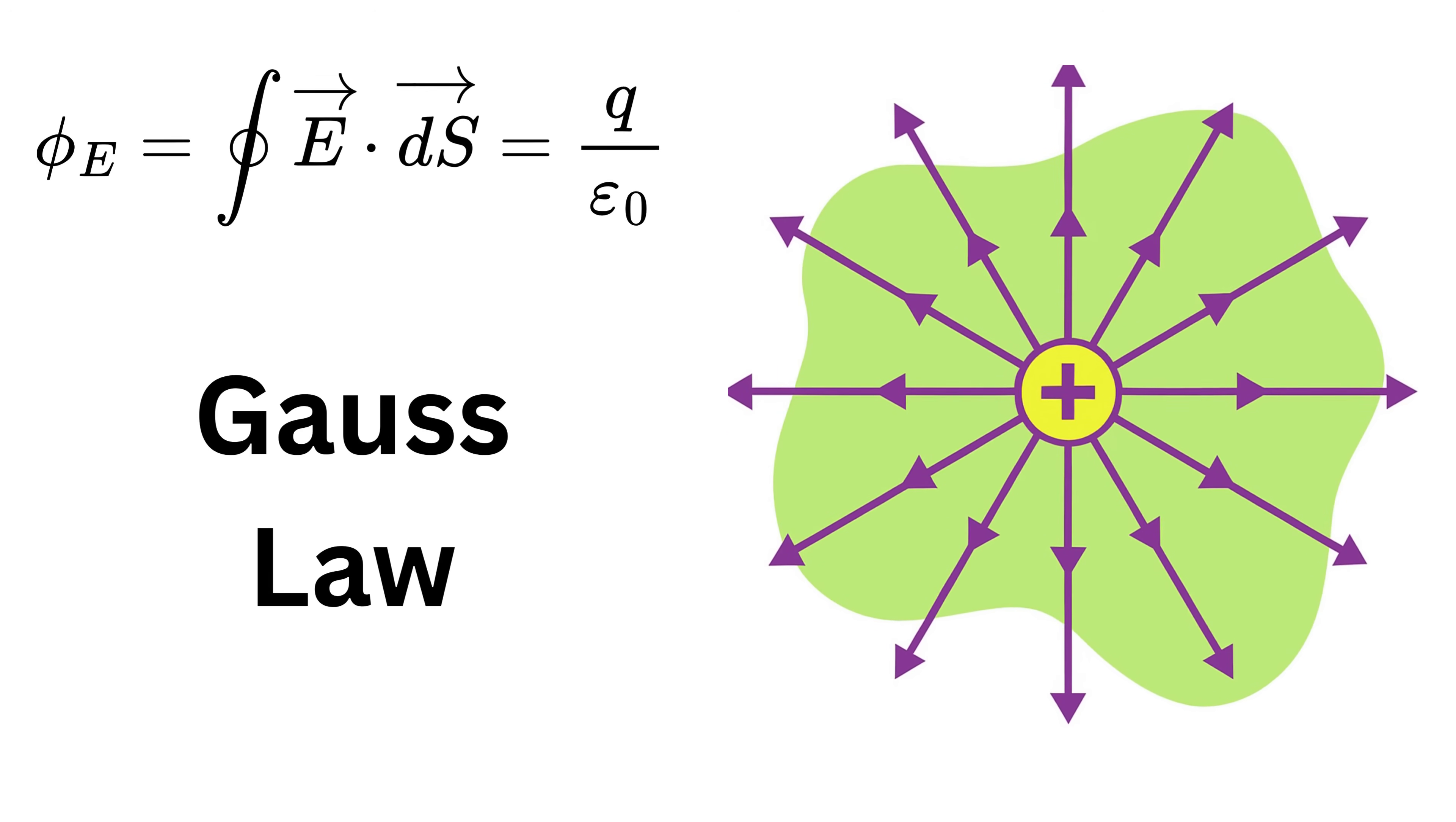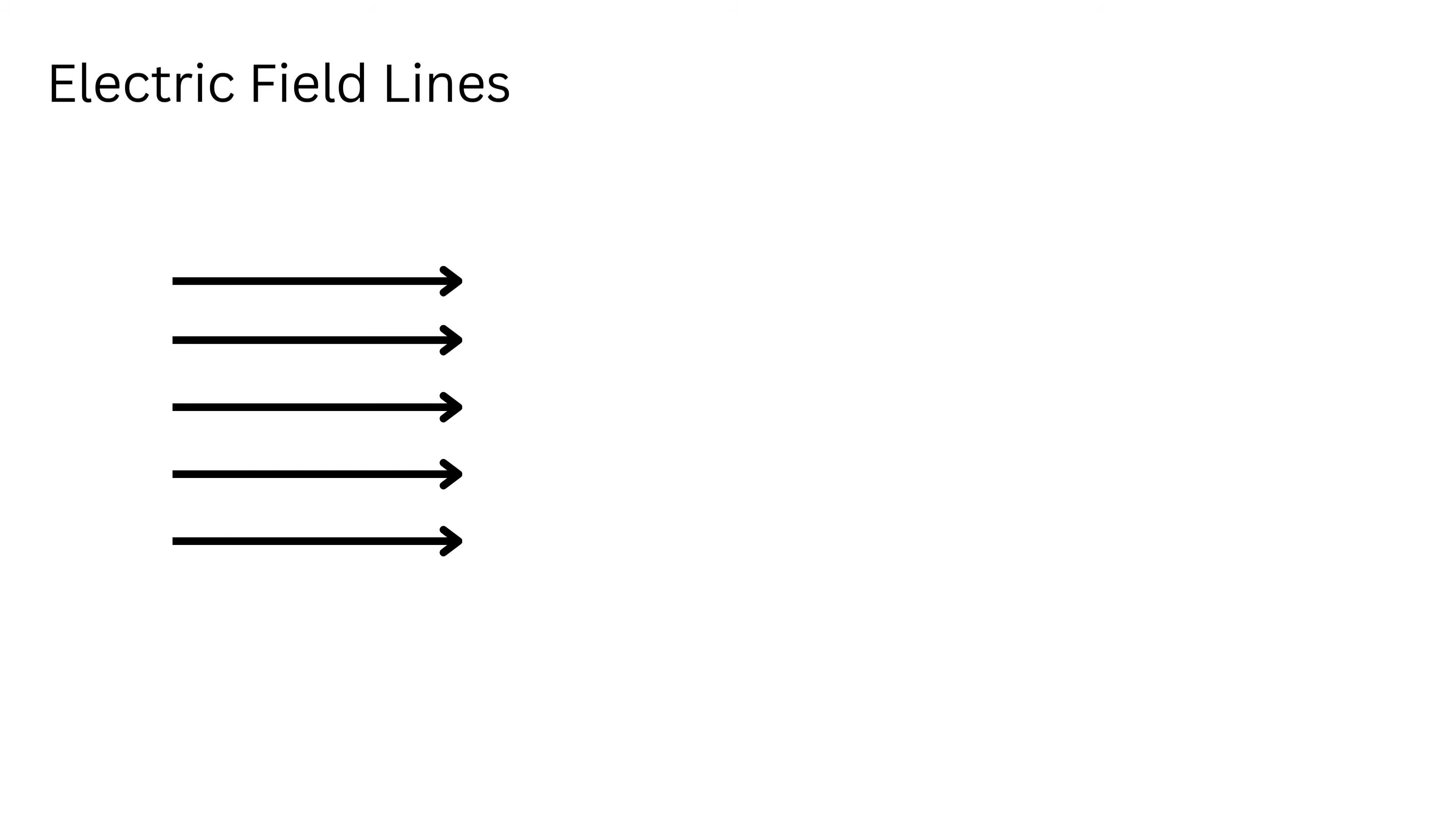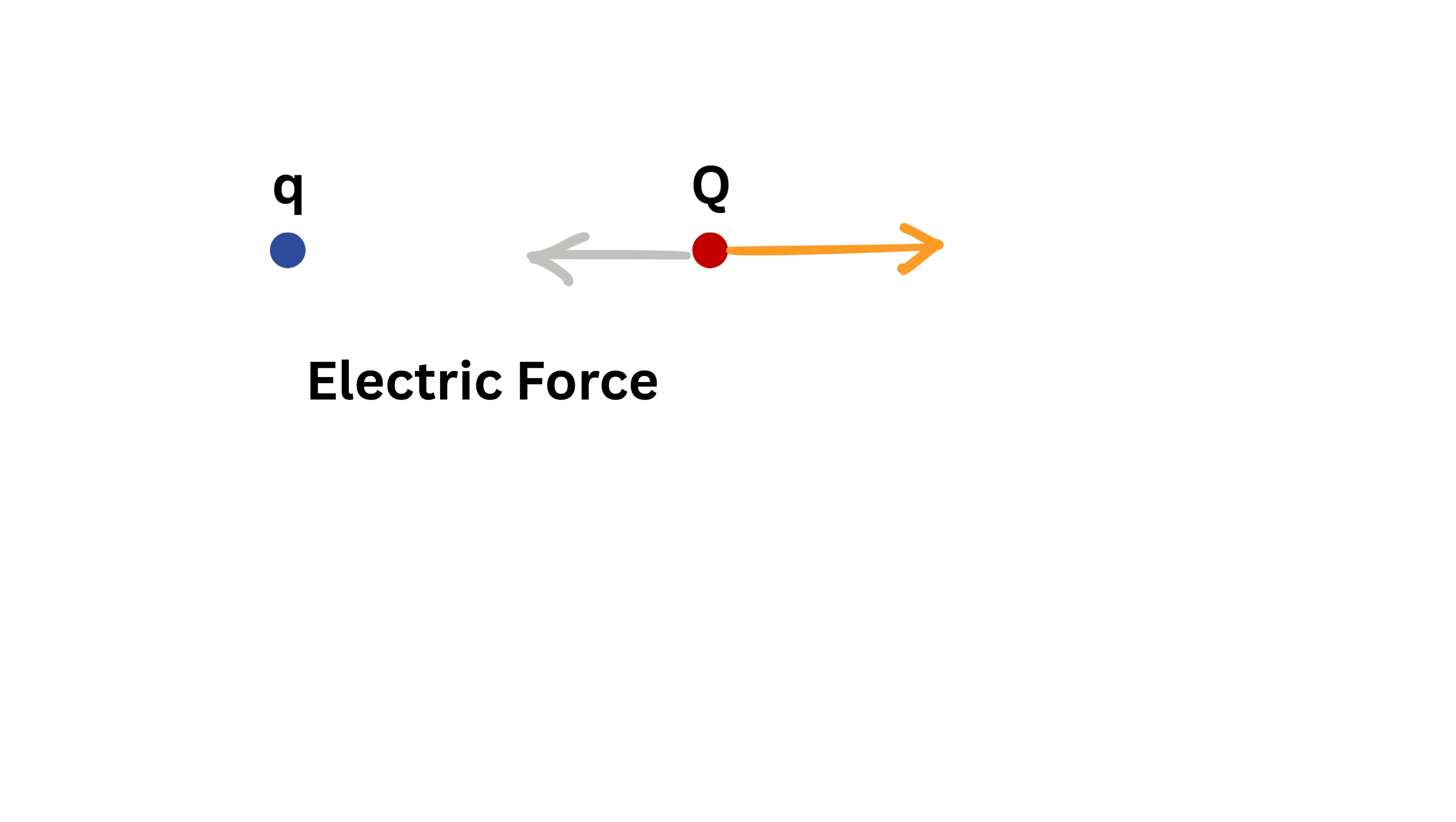Before introducing Gauss's Law, you need to understand these two things: electric field lines and electric flux. Imagine you have a charge, say a small point carrying electric charge q. We know that other charges around this charge either get pushed away or pulled toward it because of the electric force.